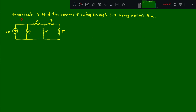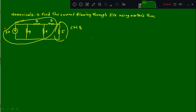Now let's move on to the numerical. Problem statement: find the current flowing through a 5 ohm resistance using Norton's Theorem. The given circuit consists of a 20 ampere current source, 4 ohm, 2 ohm, 6 ohm, 3 ohm, and 5 ohm resistances. Since we need current through the 5 ohm, that becomes Circuit B, and the remaining part becomes Circuit A.